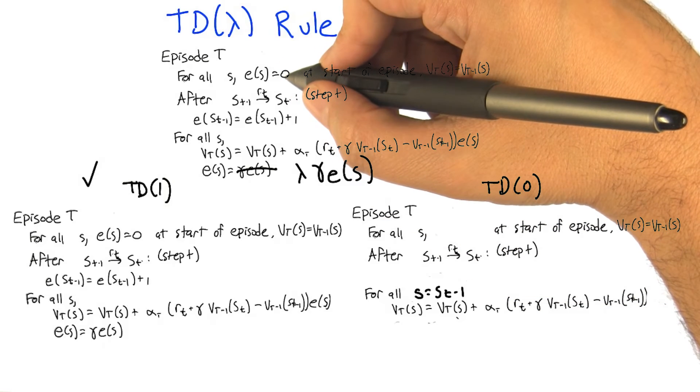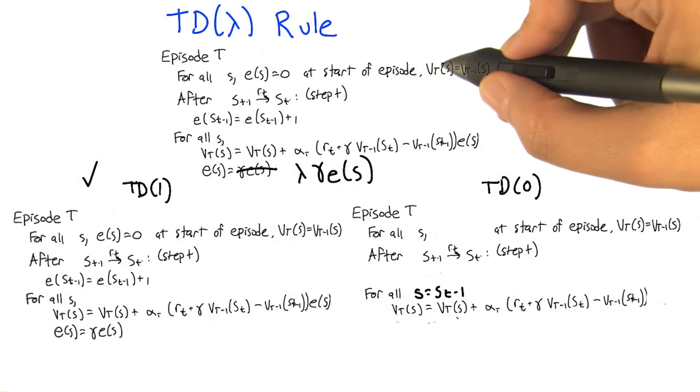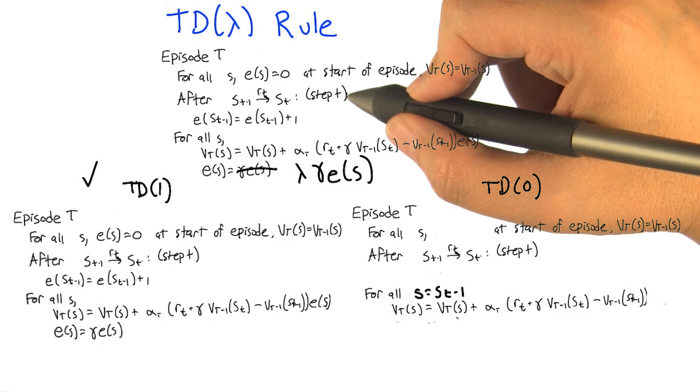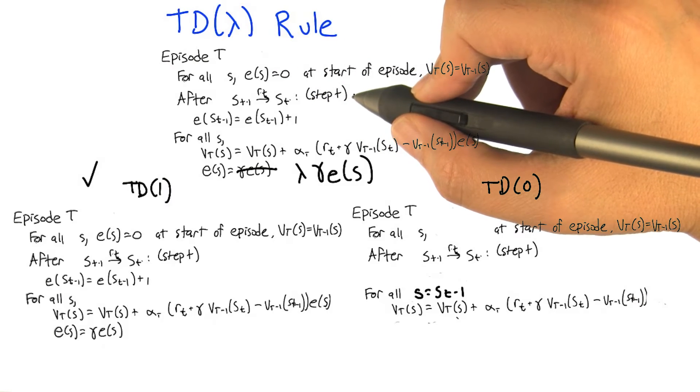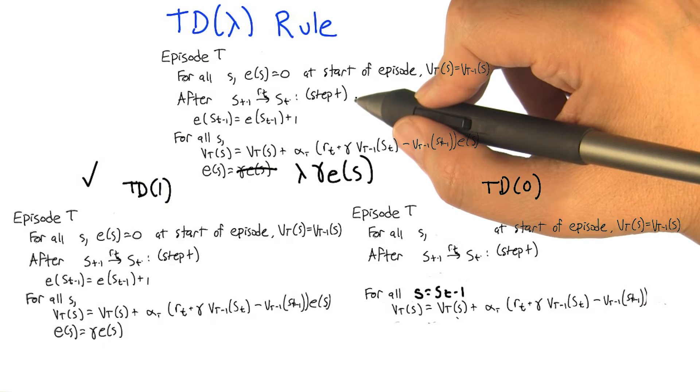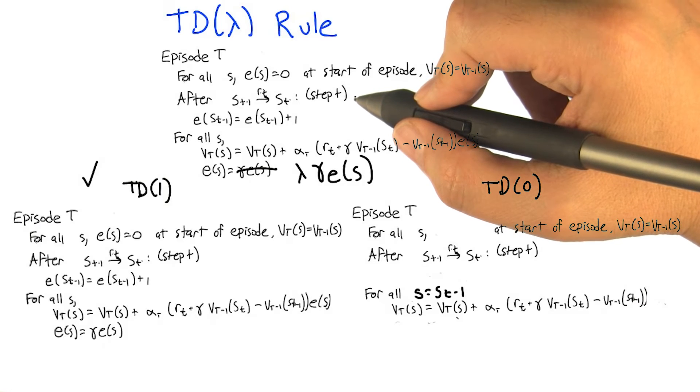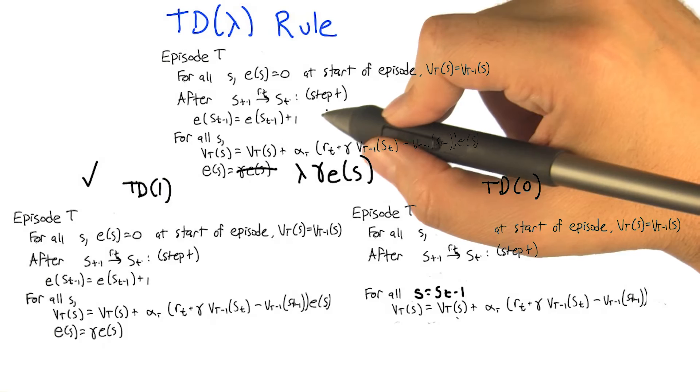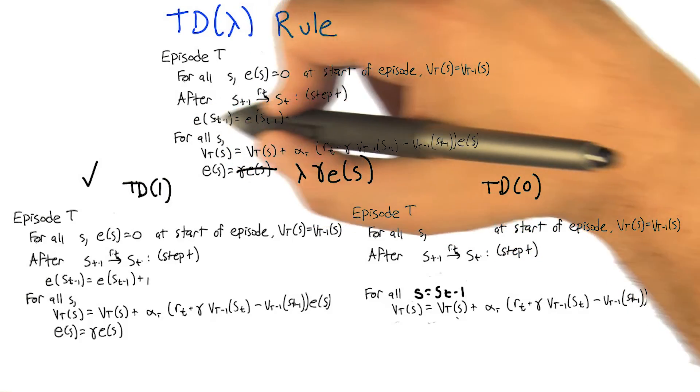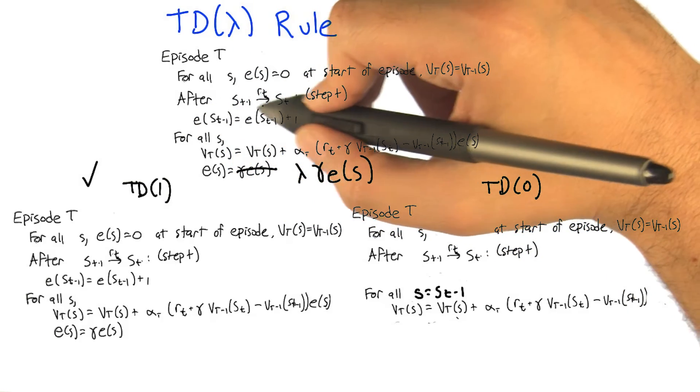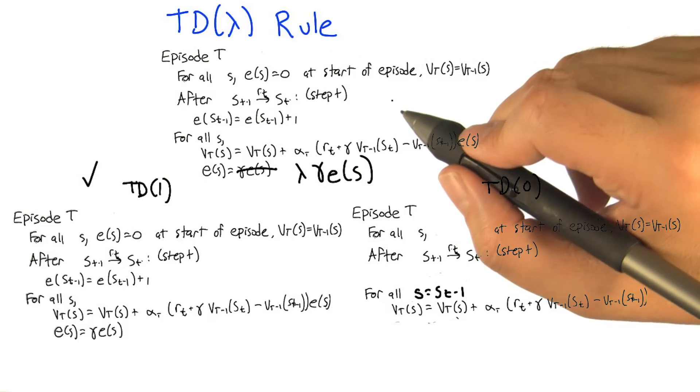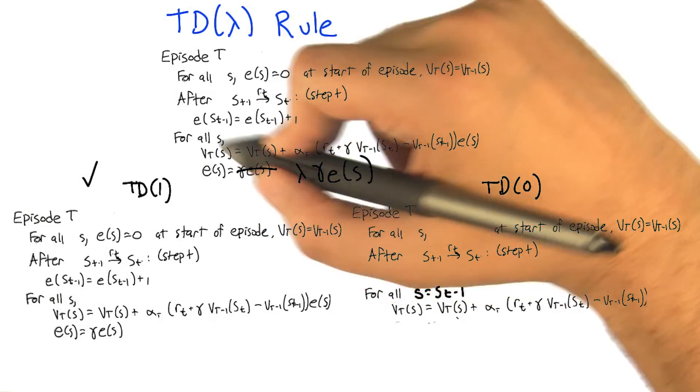So let's see, let's go back to the top. So let's see, for all s, e(s) is 0, which is where we started out, started the episode. That's nice. Then we update e(s_t minus 1) to be e(s_t) plus 1. So now e(s_t) is equal to 1. Right, good. Okay, so the eligibility of the state that we just left gets bumped up to 1. That's right. And everything else is 0. Now we loop over all states.